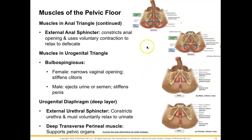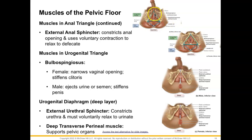Moving on to muscles in our urogenital triangle, we have the bulbospongiosus muscle. You can see it best in the male, but it is also present in females. In females, this muscle narrows the vaginal opening and helps to stiffen the clitoris. In males, it assists to eject urine or semen and stiffens the penis. The penis and clitoris are homologous structures, meaning they came from the same tissues in the embryo.